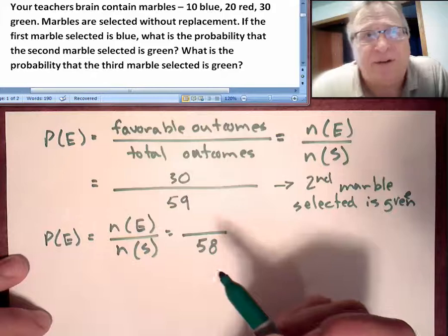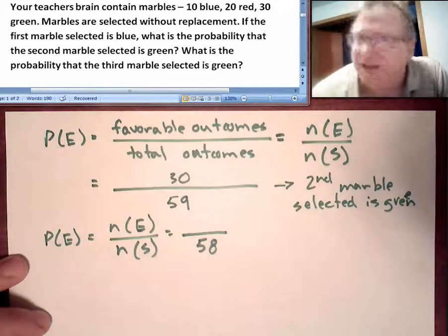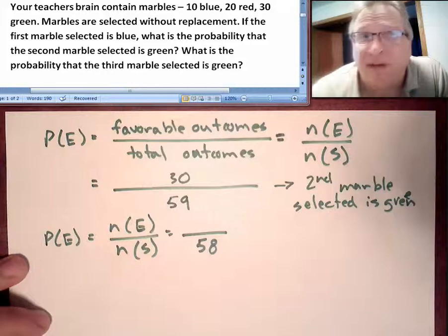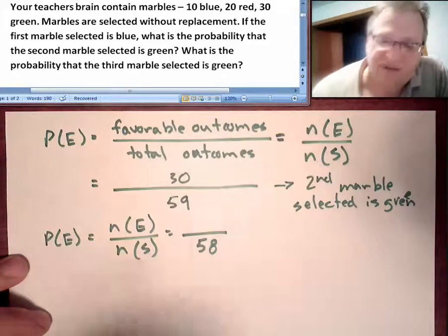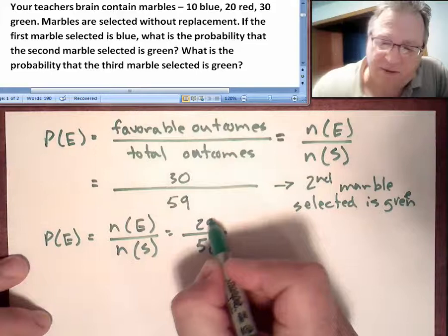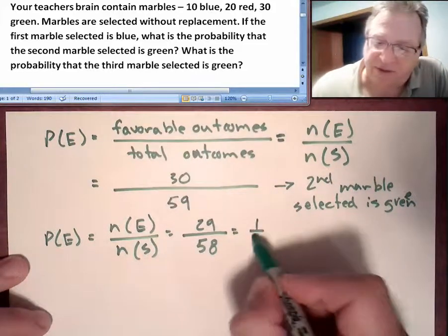There were 30 marbles, but we're assuming that on the second pull, we've pulled a green marble on the second pull, which means there are how many green marbles left? There are 29 marbles. And is that exactly one half? It sure is.